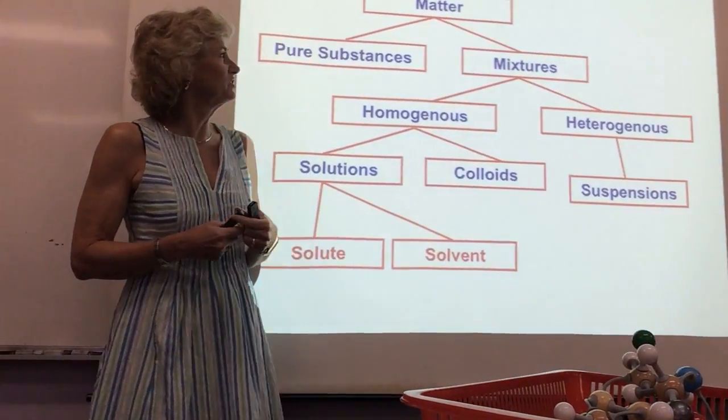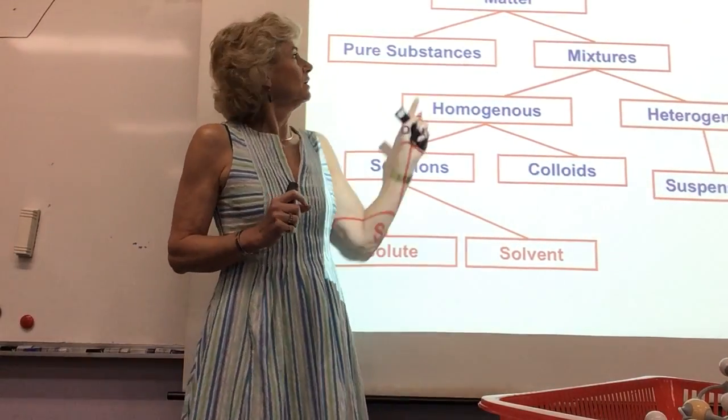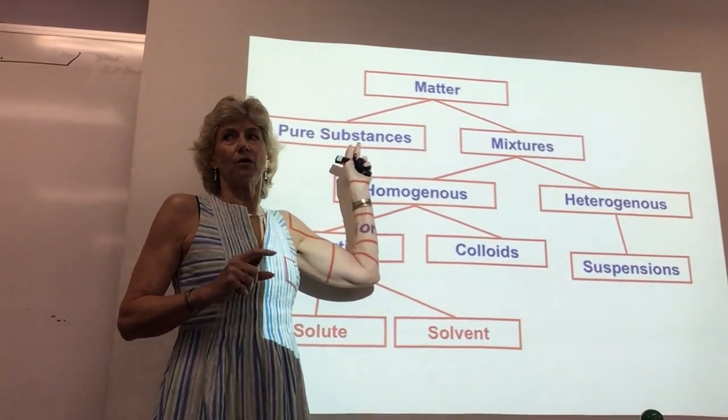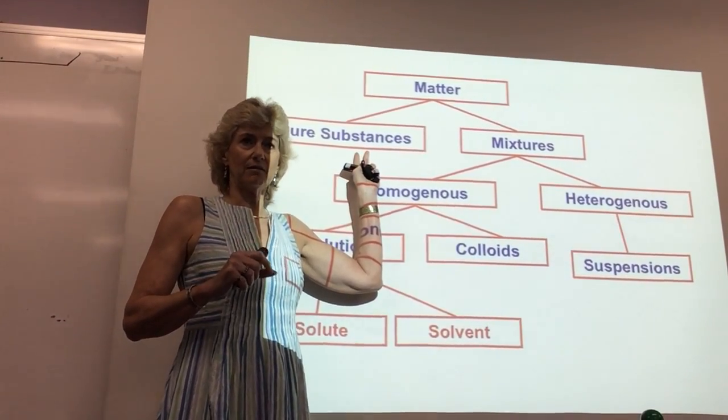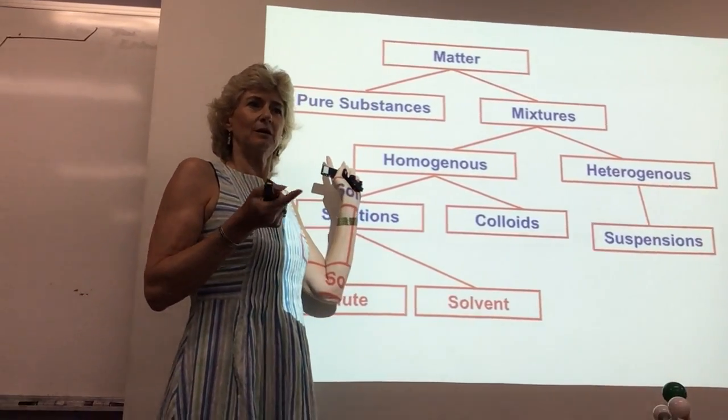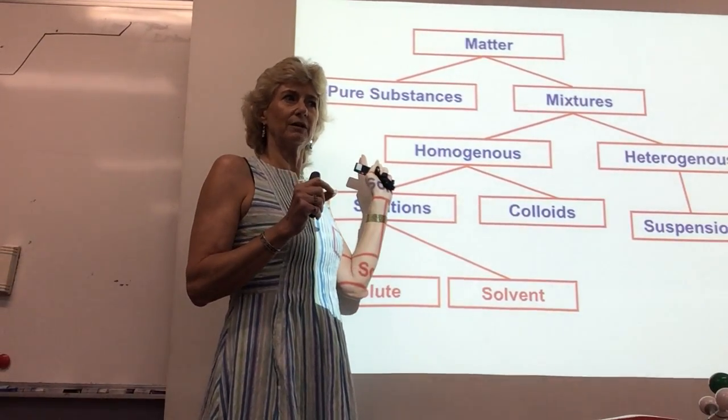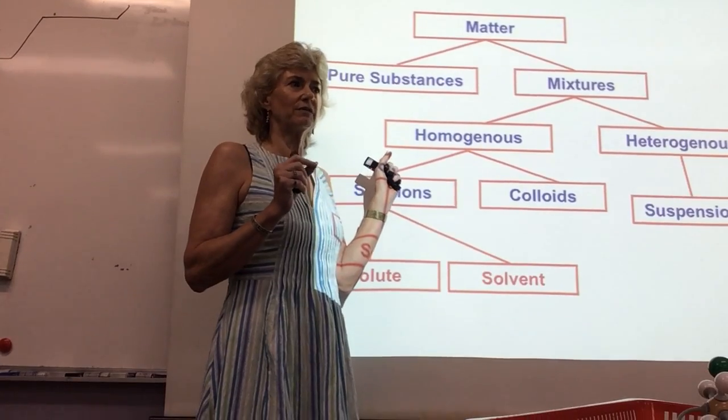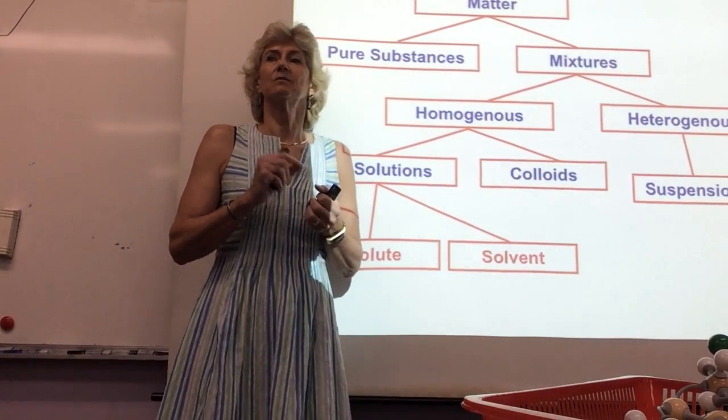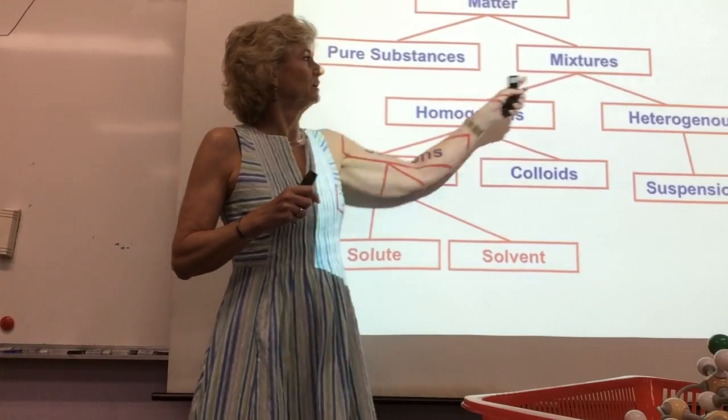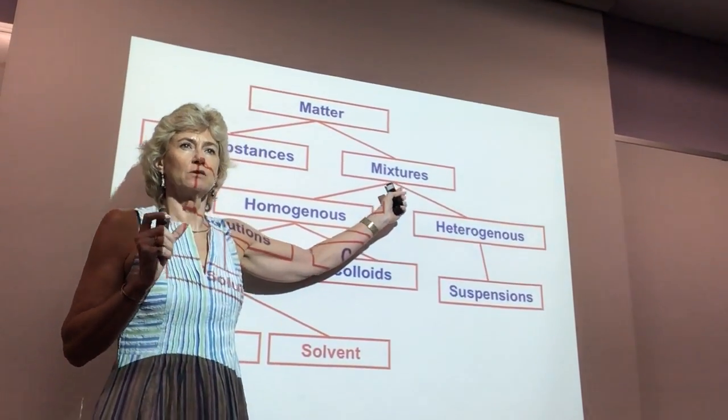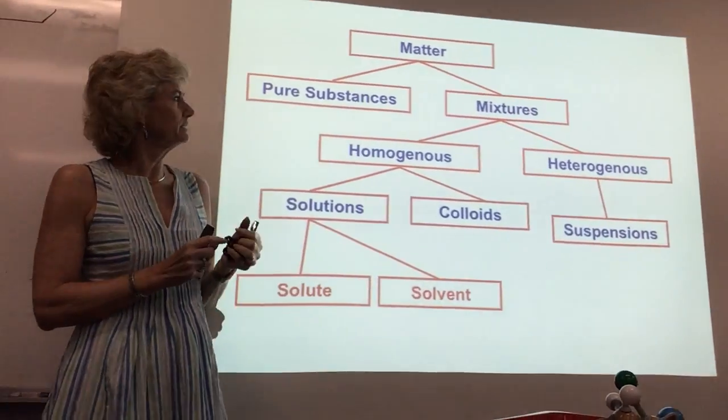This is chapter 11, solutions. You've already done most of this. All matter can be divided into mixtures and pure substances. Don't get this wrong on the AP exam. We had a question, I believe in this class, about peroxide solution, trying to find the concentration of the hydrogen peroxide in solution. It was a test on gases. Some of you missed the fact that the solution is a mixture, a mixture of water and hydrogen peroxide.